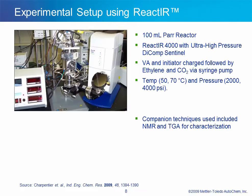The experimental setup used a 100 mL stainless steel high-pressure reactor from PAR Industries. Pressure, temperature, and stirring were controlled via an attached controller unit. A special ultra-high-pressure DICOMP sentinel probe was attached to a React-IR 4000 system. This probe is made of alloy C276, gold, and diamond, and is rated for a pressure of 4,500 psi or about 310 bar. Vinyl acetate and initiator were charged into the reactor, and then after sealing and purging with argon, ethylene and CO2 were charged via syringe pumps. Typical reactions were run for only about 30 minutes, then the reactor was cooled with the resulting polymer used for offline analysis.